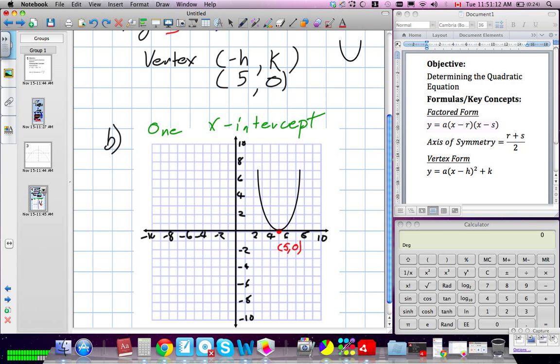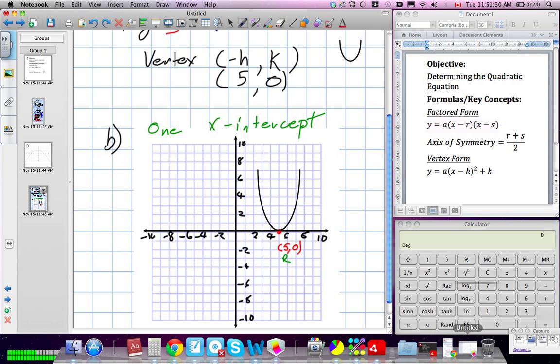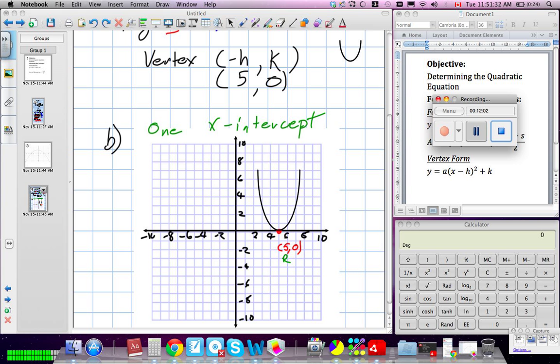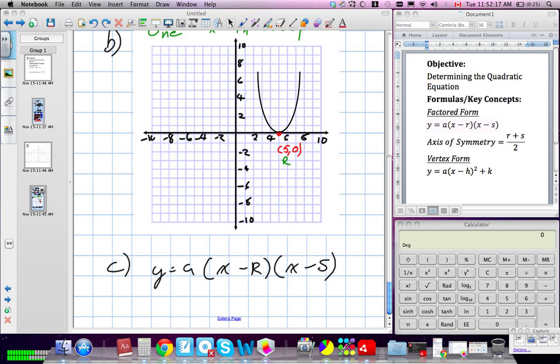And finally, it says, write the equation in the form of factored form. So, I'm just going to call this my r. My s-value would be, we don't have an s-value. So, there is no s-value. There's only one x-intercept. So, our x and our s. Now, because we don't have a separate s-value, this one vertex is going to become our r and our s-value.